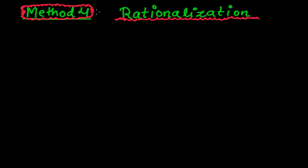Hi friends, here we are going to learn the fourth method of finding or evaluating limits — and this is rationalization. Up to this point we have learned three methods in previous videos. Depending on the question, we may have to rationalize by the numerator or sometimes by the denominator.